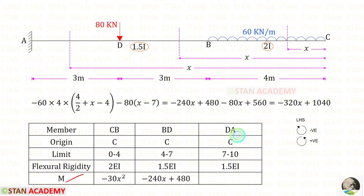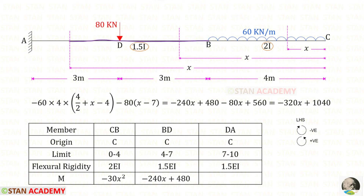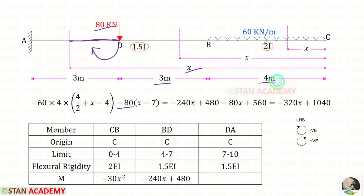Now let us find the moment M in DA. Up to the section we have both the UDL and the point load. The UDL acts clockwise over a distance of 4, giving a negative contribution of minus 60 times 4 times (x minus 2). The point load also acts clockwise and its lever arm distance is x minus 7 plus 6, which equals x minus 1, giving an additional negative term of minus 80 times (x minus 1). After simplifying, we apply the result to the table.